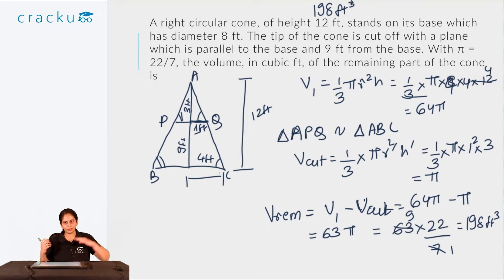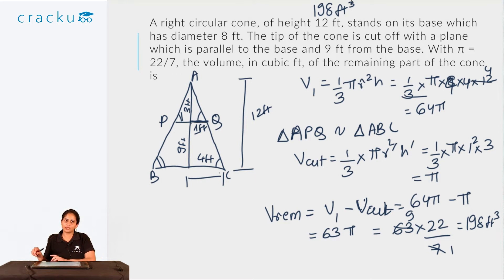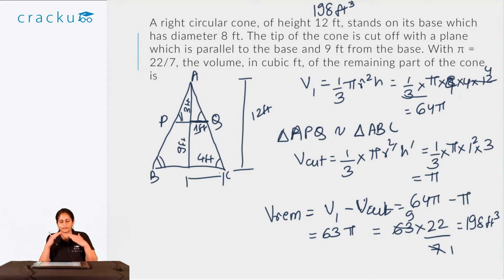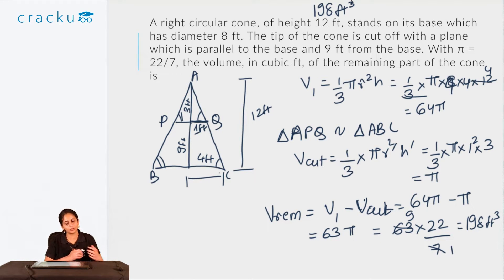It is very important that when you cut something parallel to the base, you are essentially forming a smaller version of the original cone and everything will be in proportion. If the height is one-fourth of the original cone's height, then the base radius will also be one-fourth and the slant height will be one-fourth — everything in the same proportion. You need to know the volume formula for a right circular cone to solve this question.